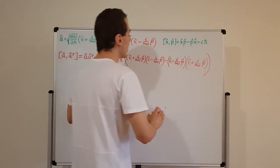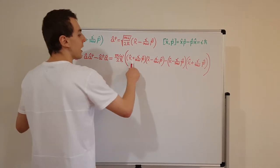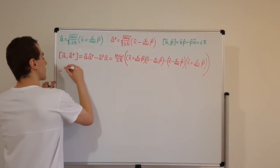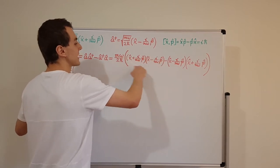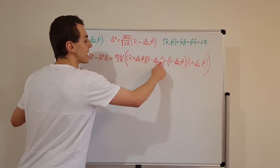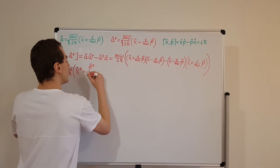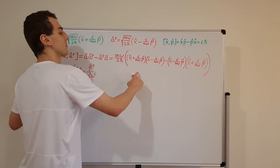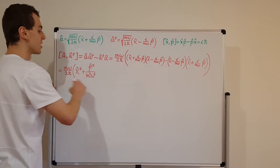Now we expand. Multiplying x hat by x hat gives x hat squared. Multiplying the second terms together: i times minus i gives plus 1, and squaring the rest gives p hat squared over m squared omega squared. So i times i is i squared which is minus 1, and minus 1 times minus 1 gives plus 1 — that explains these terms.